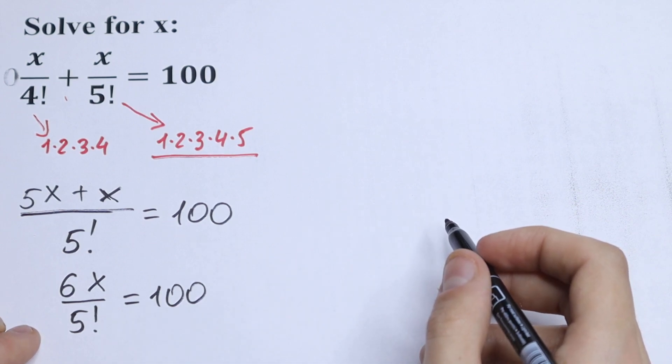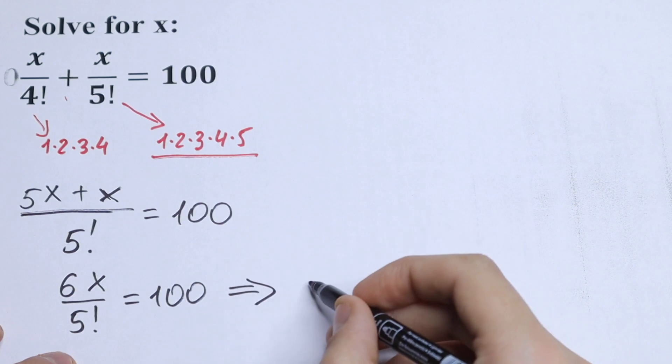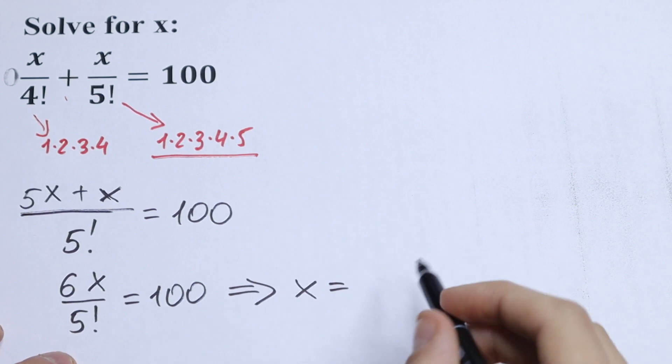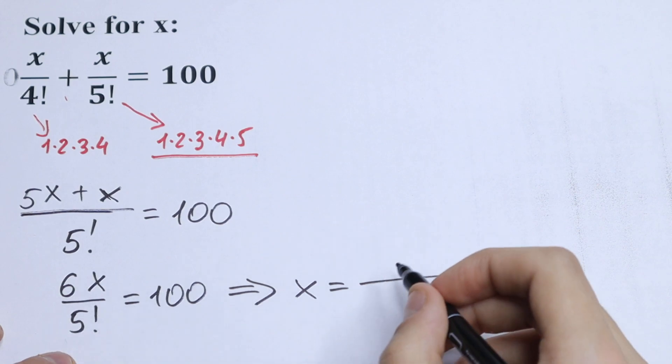How can we solve this? Of course using cross-multiplying, so we will have x equals 5 factorial times 100 divided by 6.